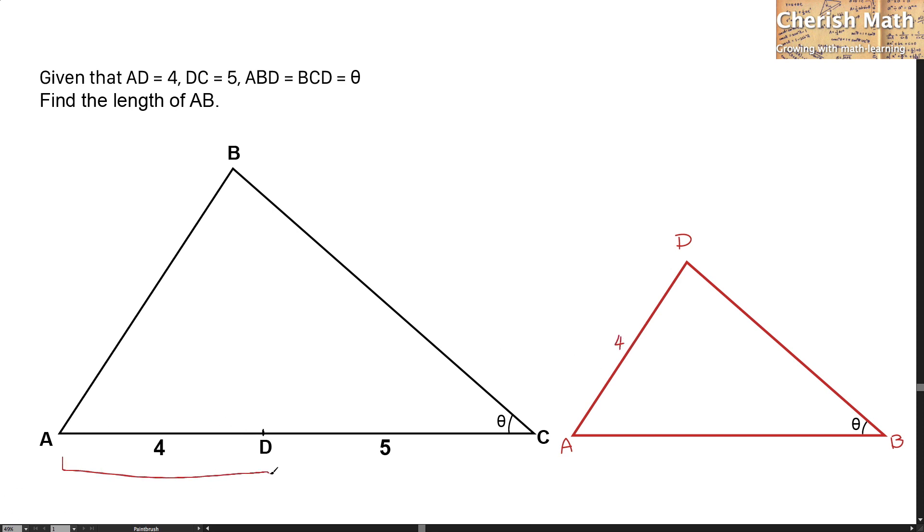And the entire length of AC is just the sum of 4 and 5, which is at 9 units. The entire picture here is very clear and we can use it to solve the problem.